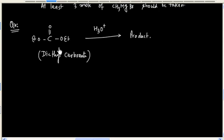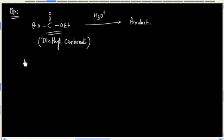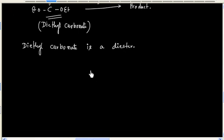Basically diethyl carbonate is a diester. And we know ester upon hydrolysis gives acid plus alcohol.